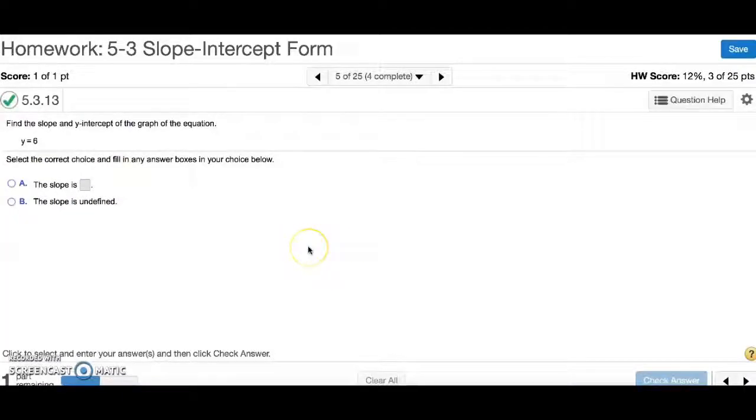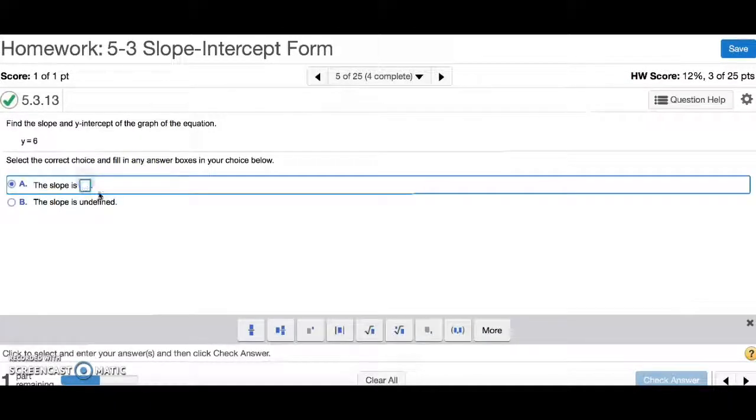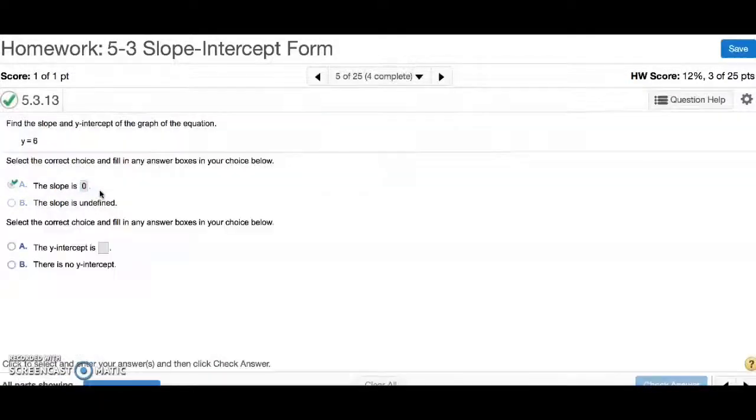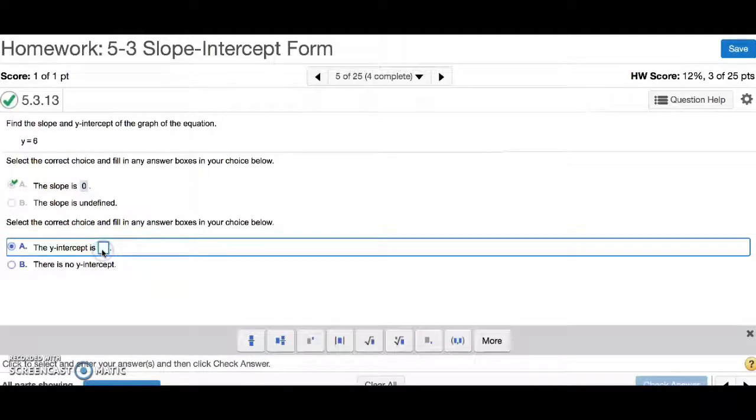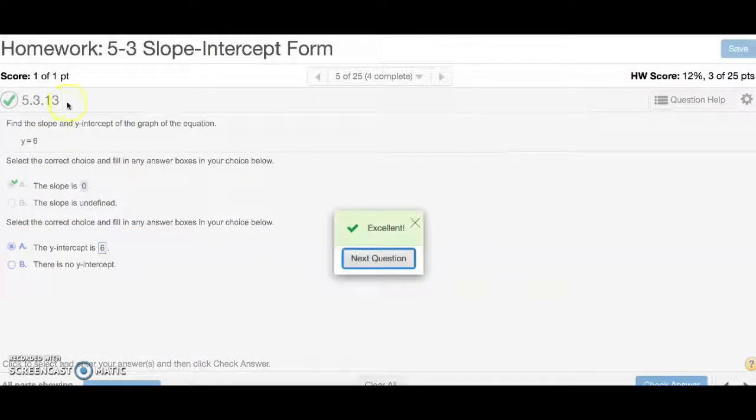Number 5, find the slope and y-intercept of the graph of the equation. Where we have just y equaling a number, that means its graph is a horizontal line. And every horizontal line has a slope of 0. So we're going to type in 0. The y-intercept, we have y equaling 6, so the y-intercept is 6. And that's number 5.